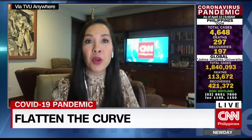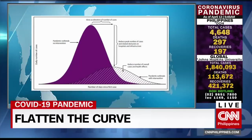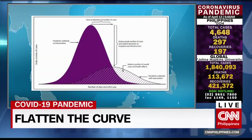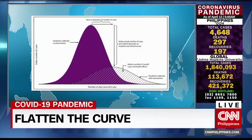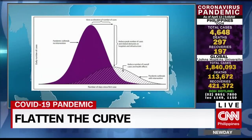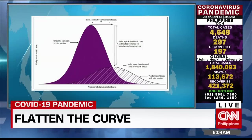We keep hearing the phrase 'flatten the curve,' and it essentially means to spread out the number of new cases of the coronavirus over a long period of time. That way hospitals are not overwhelmed and people can have better access to the health care system. The steep purple curve shows how quickly a disease can infect so many people over a short period of time, and that's what happens if aggressive steps are not taken, such as social distancing and quarantines.